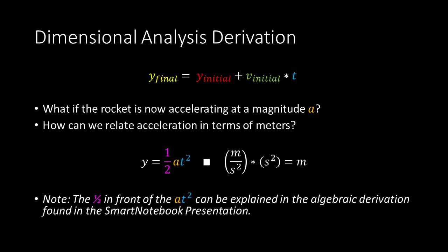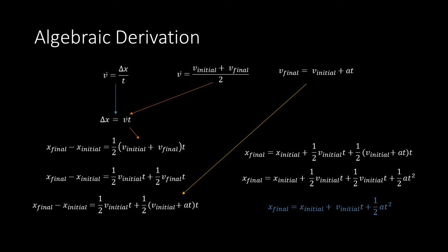Note, the one-half in front of the at squared can be explained in the algebraic derivation found in the subsequent slide and the smart notebook presentation. At this moment, pause the video and review the algebraic derivation for the second kinematics equation.